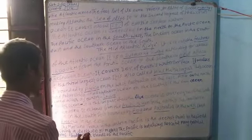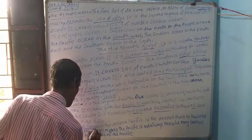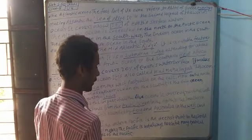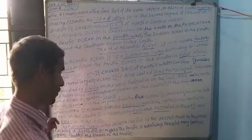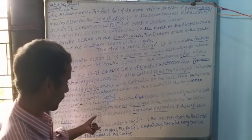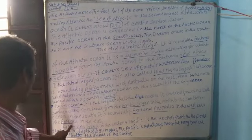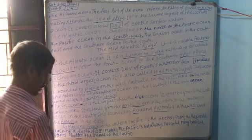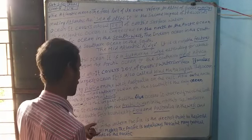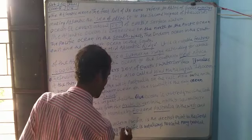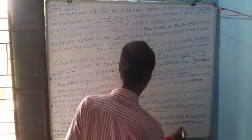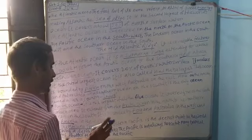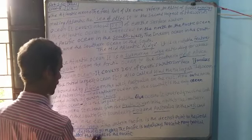The Mariana Trench in the Western Pacific Ocean is the deepest point in the world. The Pacific is not always peaceful, generating many tropical storms around the Pacific islands.